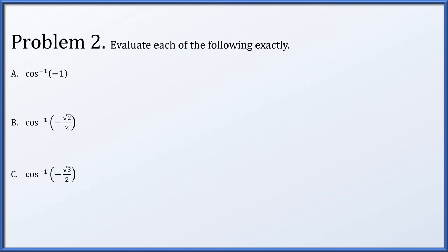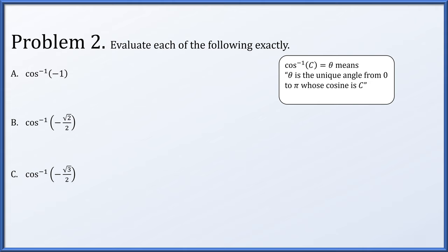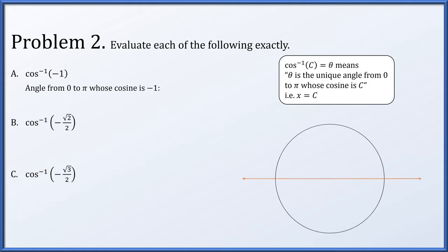In problem 2, we're going to evaluate each of three expressions exactly. The arc cosine of c equals theta by definition means theta is the unique angle between zero and pi whose cosine is c — in other words, pointing somewhere on the unit circle whose x coordinate is c. Looking at item a, we're looking for an angle from zero to pi whose cosine is minus one. Drawing our standard unit circle, we want the x coordinate to be minus one. The angle between zero and pi that points there is pi.